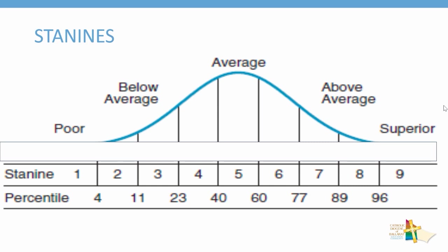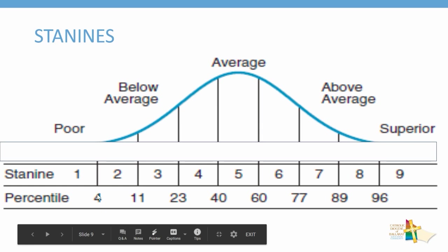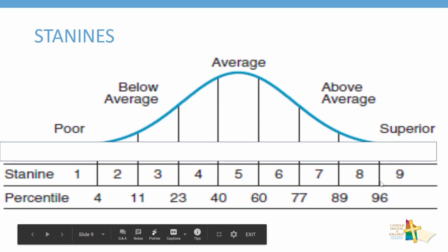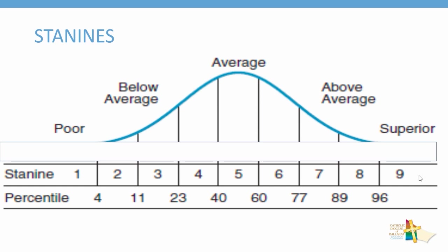Percentiles are used to develop the stanines. Stanines are simply groups of percentiles and they're a way of looking at large cohorts or large numbers of students and grouping their percentiles together. There are nine stanines — the standard nine. Stanine 1 is from the 0th to the 4th percentile, so a child in stanine 1 is achieving in the bottom 4% of the population. It simply mirrors at the top end — from the 96th percentile on is stanine 9, so those children are achieving equal to or greater than 96% of the population.